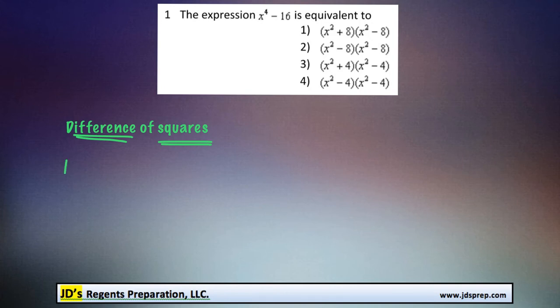One other quick example would be 4x squared minus, let's say, 25. Because we're subtracting the two terms, and we could square root both of them. The square root of 4 would be 2, the square root of x squared is x, and the square root of 25 is 5.